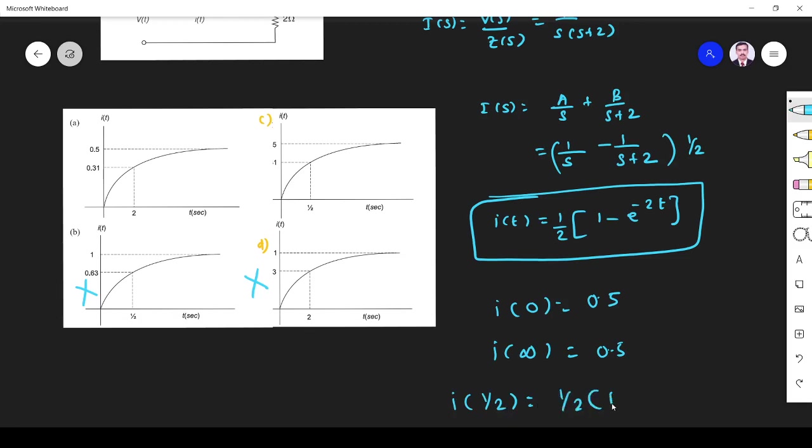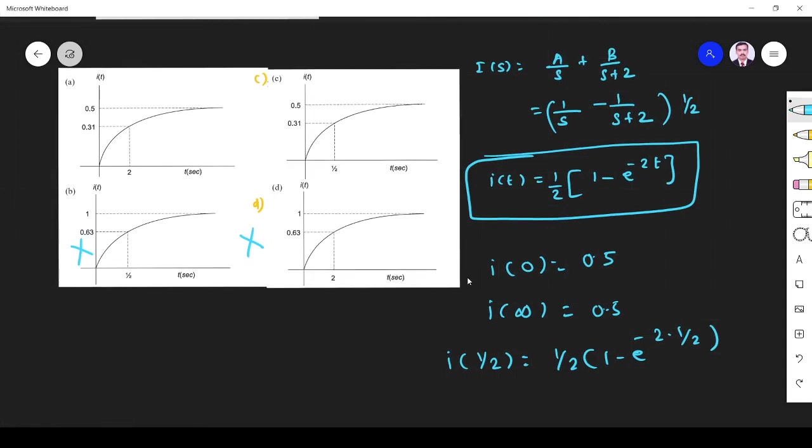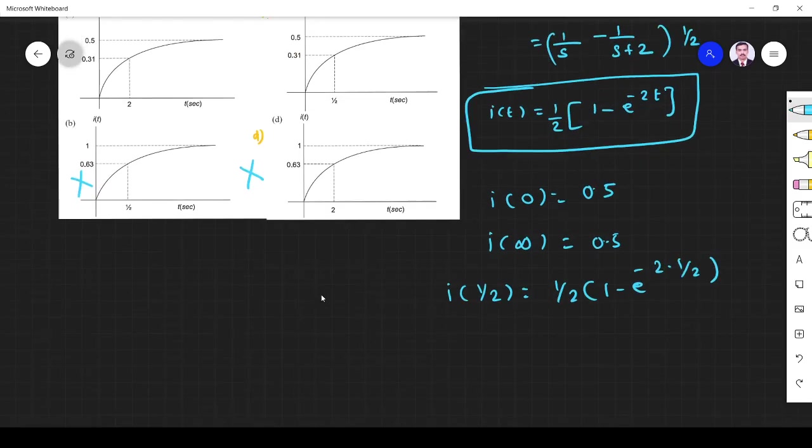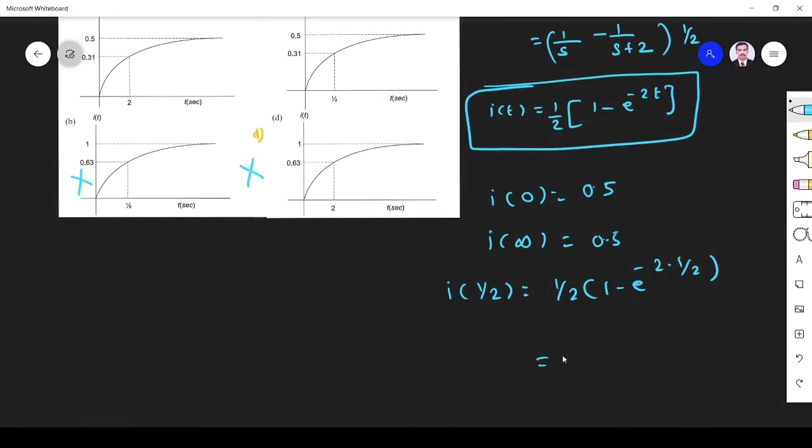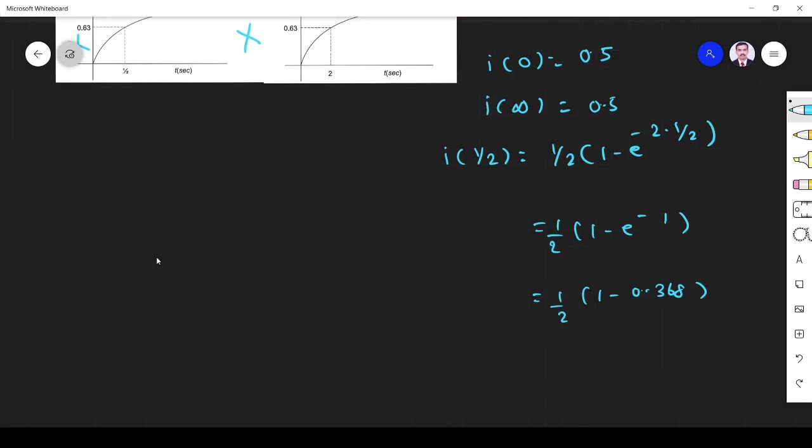So it is 1/2 minus e^(-2×1/2). So it will be 1/2, 2 into this one. So I can write 1/2(1 - e^(-1)). So it will be 1/2. 1/2 into e^(-1) is 0.368. So if I simplify, what I get is 0.316.